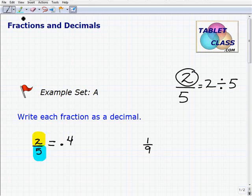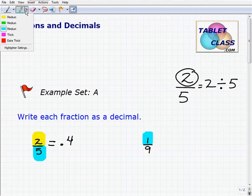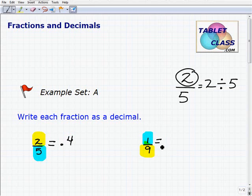Alright, so we'll move on to our next problem, 1 ninth. So we're going to take 1 and divide it by 9. So we'll go ahead and type that into your calculator. So we get 1 divided by 9. And now you've noticed here that the answer is 0.1111, and it just keeps going. It fills up your screen. Now this is what we call a repeating decimal.